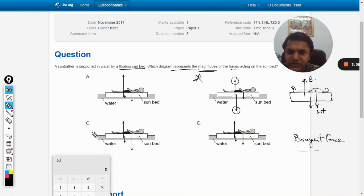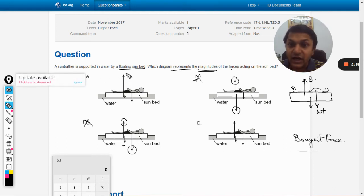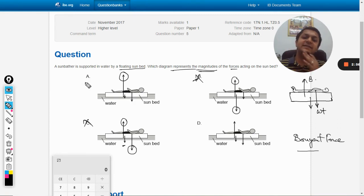And in option C, again this force is equal to this force as the diagram shows. So this force is unbalanced, so C is also wrong.